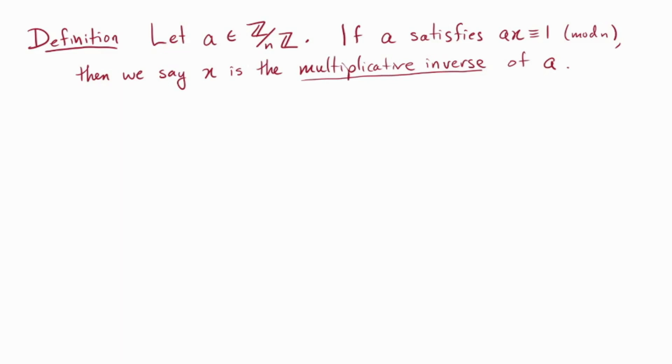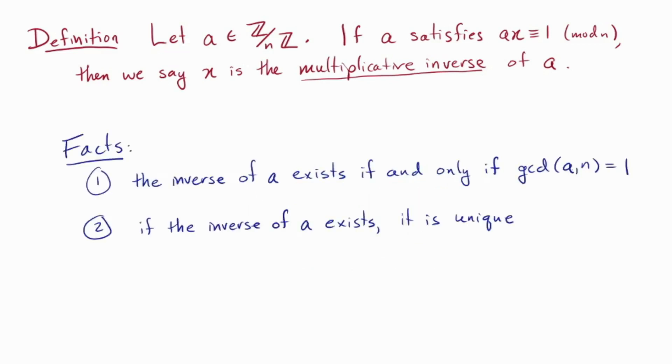Some things don't have a multiplicative inverse, like two mod four. No amount of multiplying two by things will ever get you one mod four, because we can't even ever get anything odd.